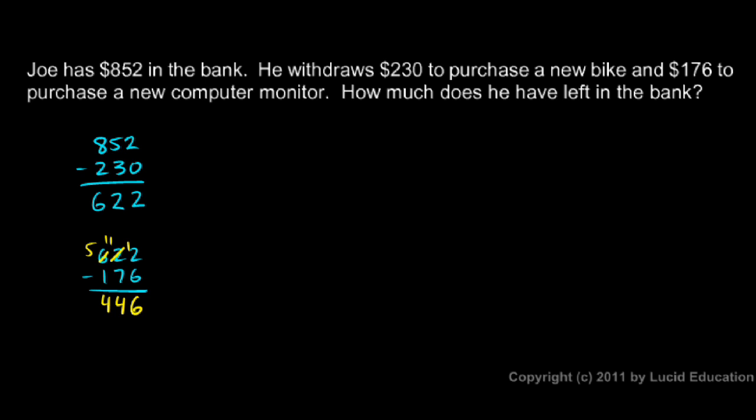And then in the last column here I have $5 minus $1 which is $4. So $446 is my answer. And that's $446. That's how much is left after making these two withdrawals.